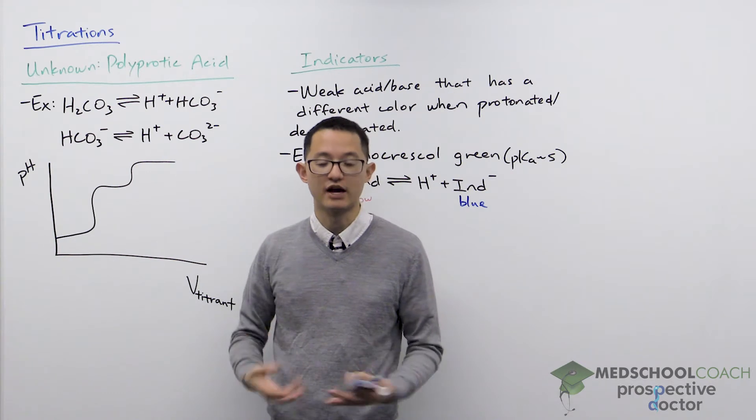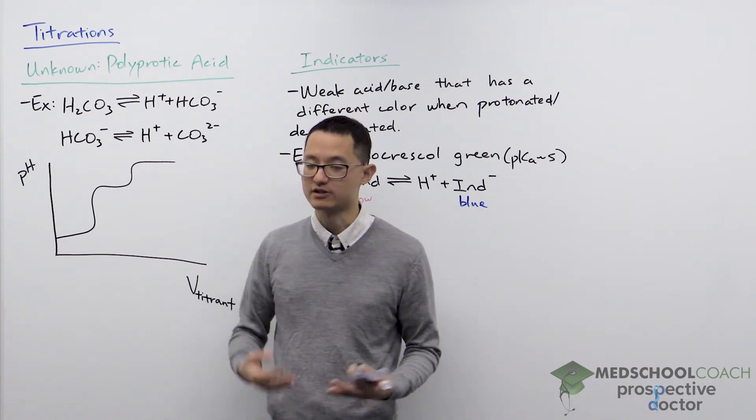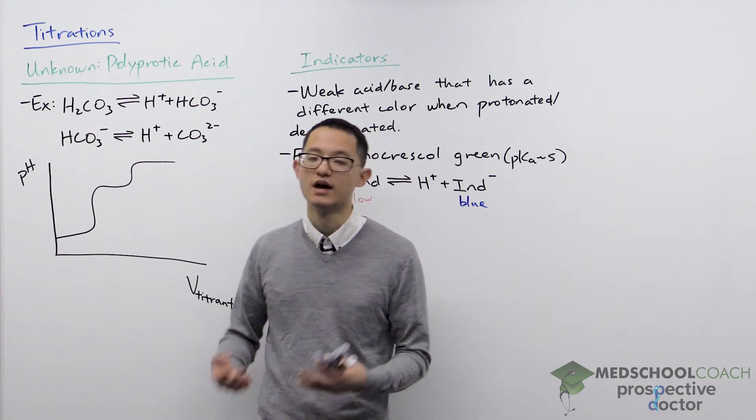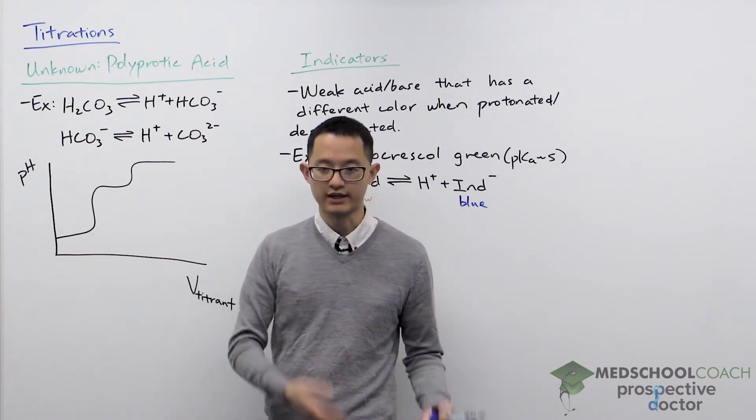So carbonic acid is a diprotic acid. We can get two hydrogen ions per carbonic acid molecule.